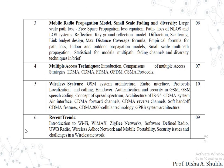The next chapter is mobile radio propagation model, small scale fading and diversity. This chapter includes large scale path loss, free space propagation loss equation, path loss N-loss and L-loss systems, reflection, two-ray ground reflection model, diffraction, scattering, link budget design, maximum distance coverage formula, empirical formula for path loss, indoor and outdoor propagation models, small scale multipath propagation, statistical models for multipath fading channels, and diversity techniques in brief.